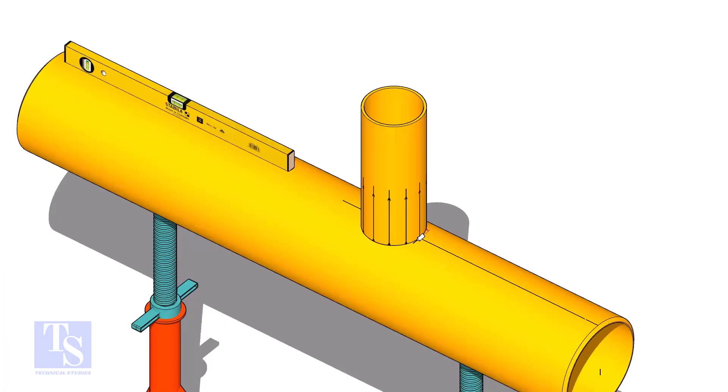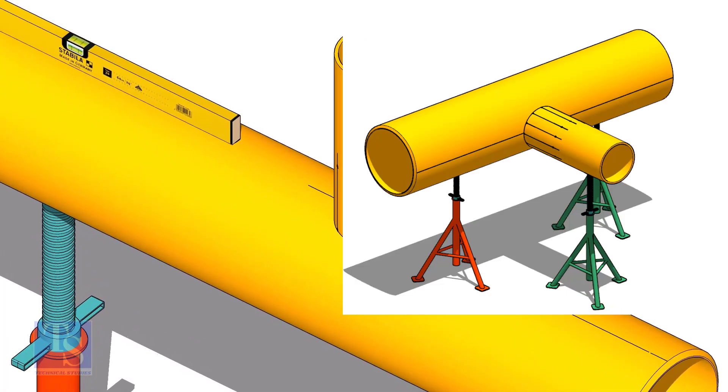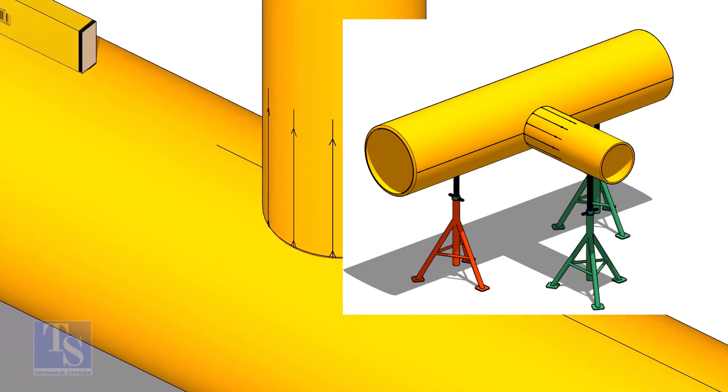Tack weld the branch on the header just to stand it vertically. If the pipes are large, you can do it in the horizontal position also.